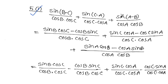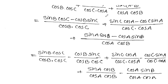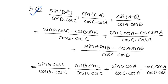The first identity: sin(B minus C) by cosB·cosC, plus sin(C minus A) by cosC·cosA, plus sin(A minus B) by cosA·cosB equals zero. Now the mechanics: sin(B minus C) and sin(A minus B) — we look at sin(B minus C) which equals sinB·cosC minus cosB·sinC, then sinA·cosB minus cosA·sinB.